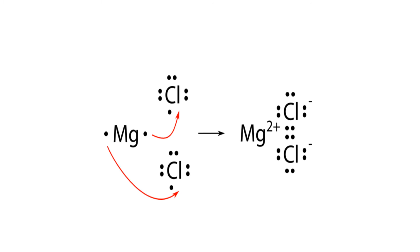Let us see another example — magnesium chloride. The formula for magnesium chloride is MgCl₂, meaning one atom of magnesium reacts with two atoms of chlorine to form magnesium chloride. This is because magnesium has to lose two electrons. Its configuration is 2, 8, 2, so it will lose two electrons to complete its octet. These two electrons will each be received by one chlorine atom, since chlorine's electronic configuration is 2, 8, 7 and it needs one electron.